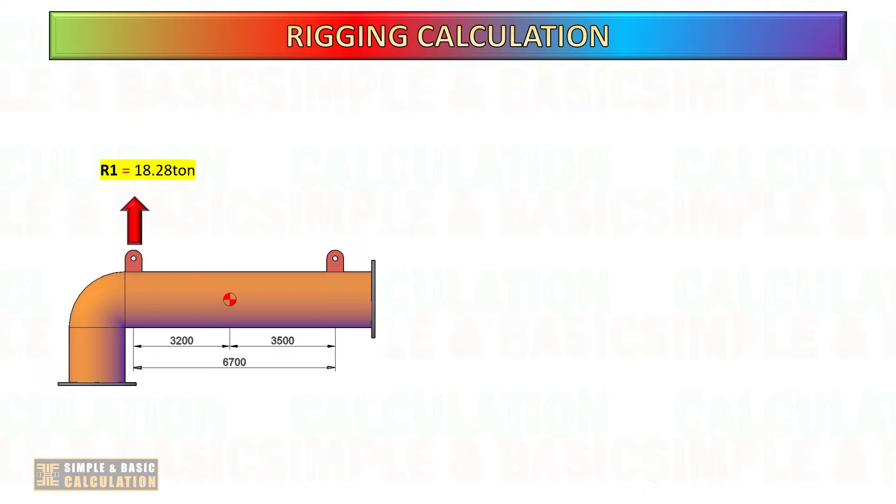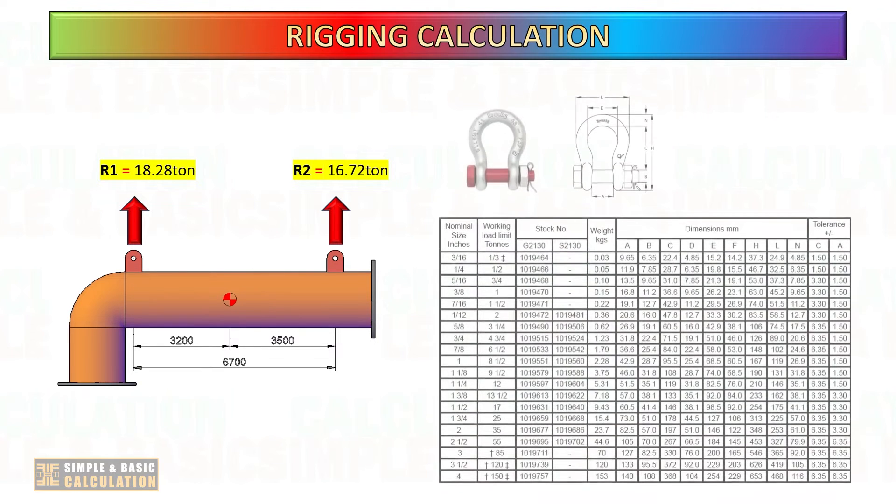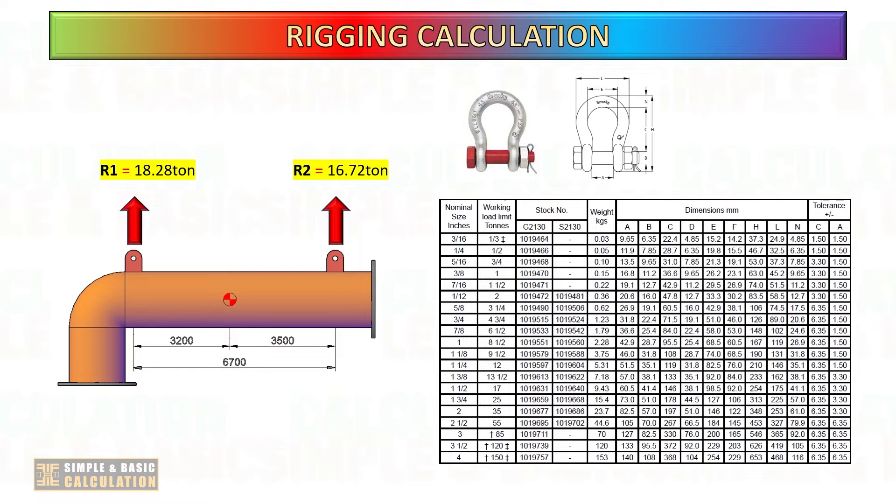Based on calculations, as the center of gravity of the cargo is located close to lifting point number one, the forces or load exerted on this side are significantly greater. We must prioritize the selection of lifting equipment based on its higher value.